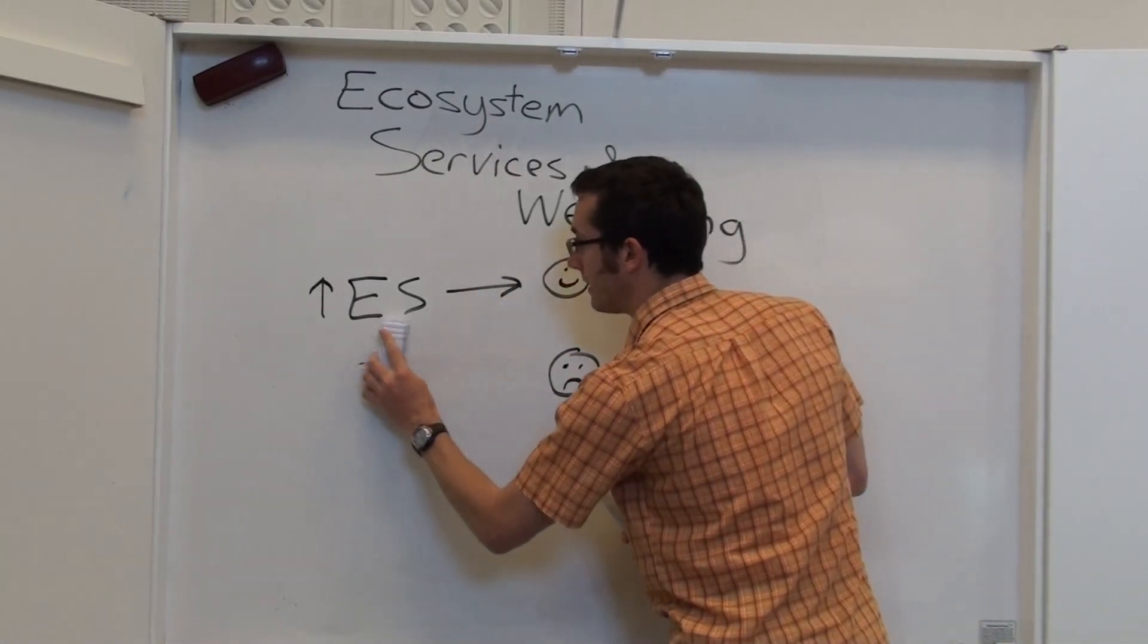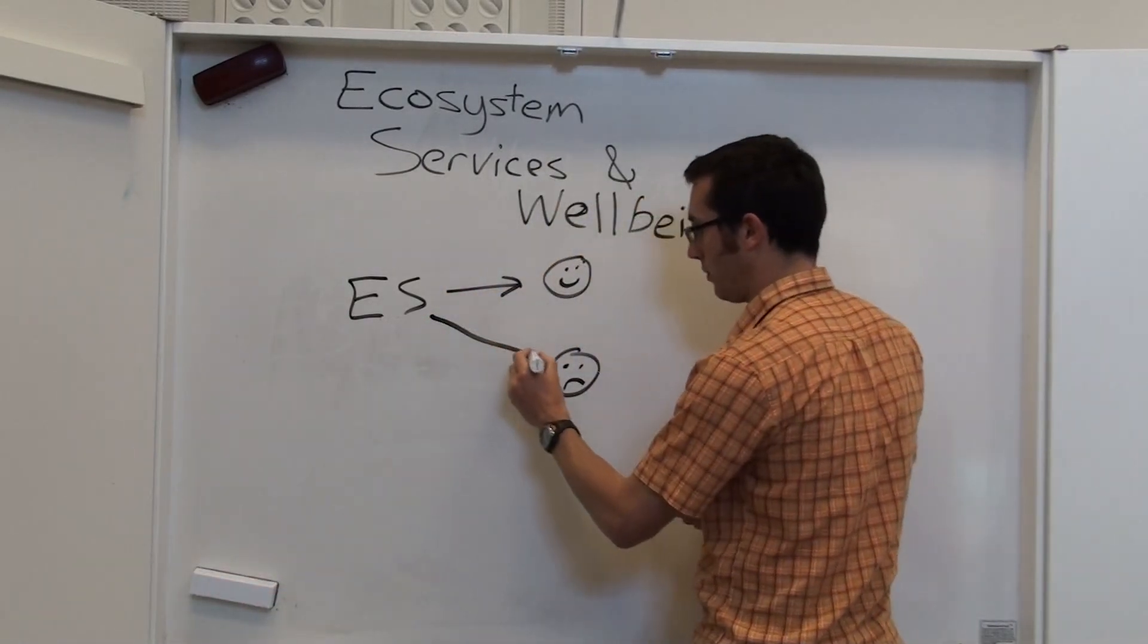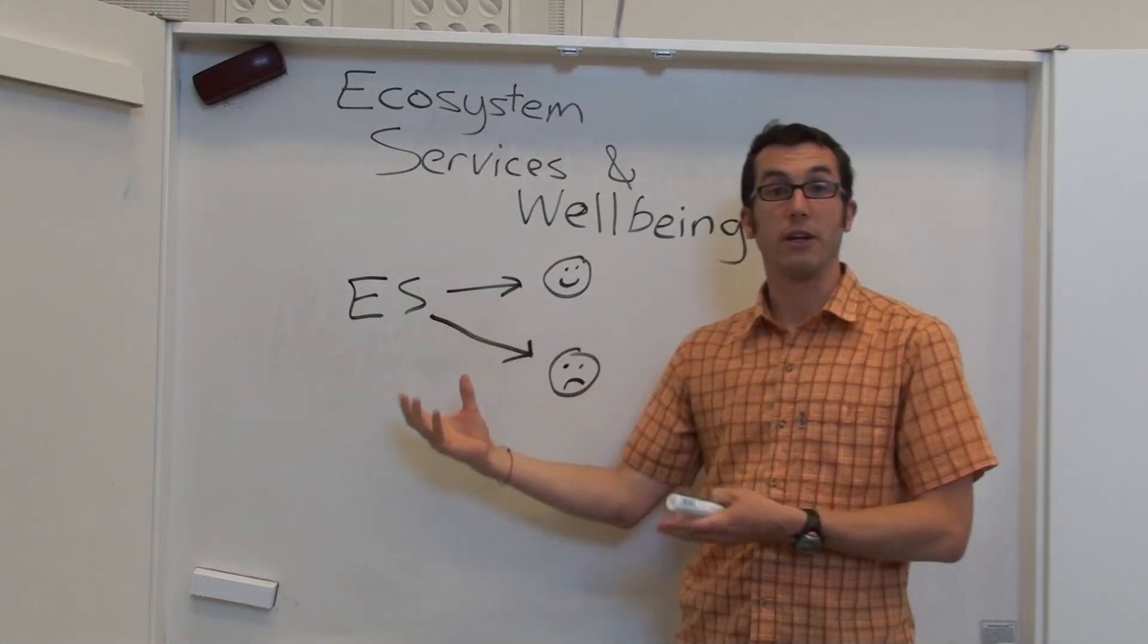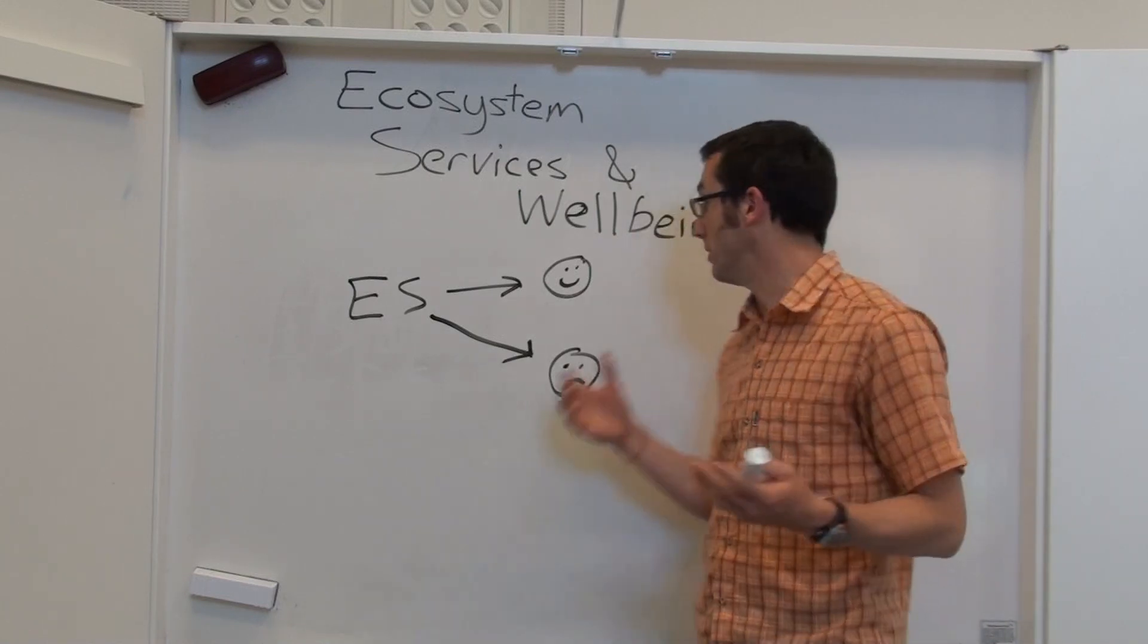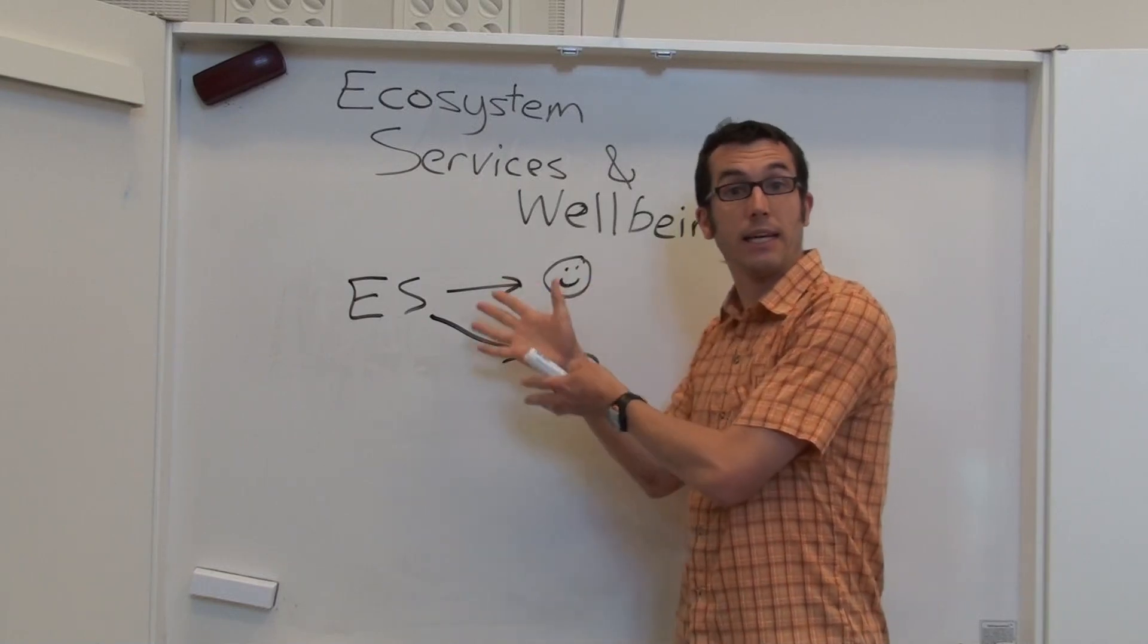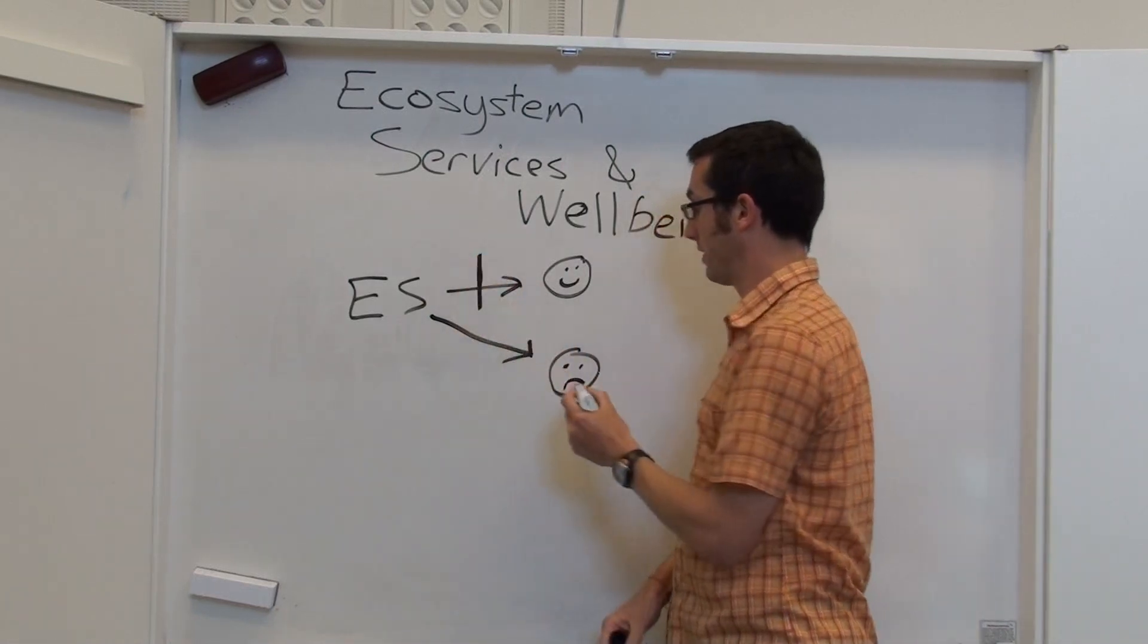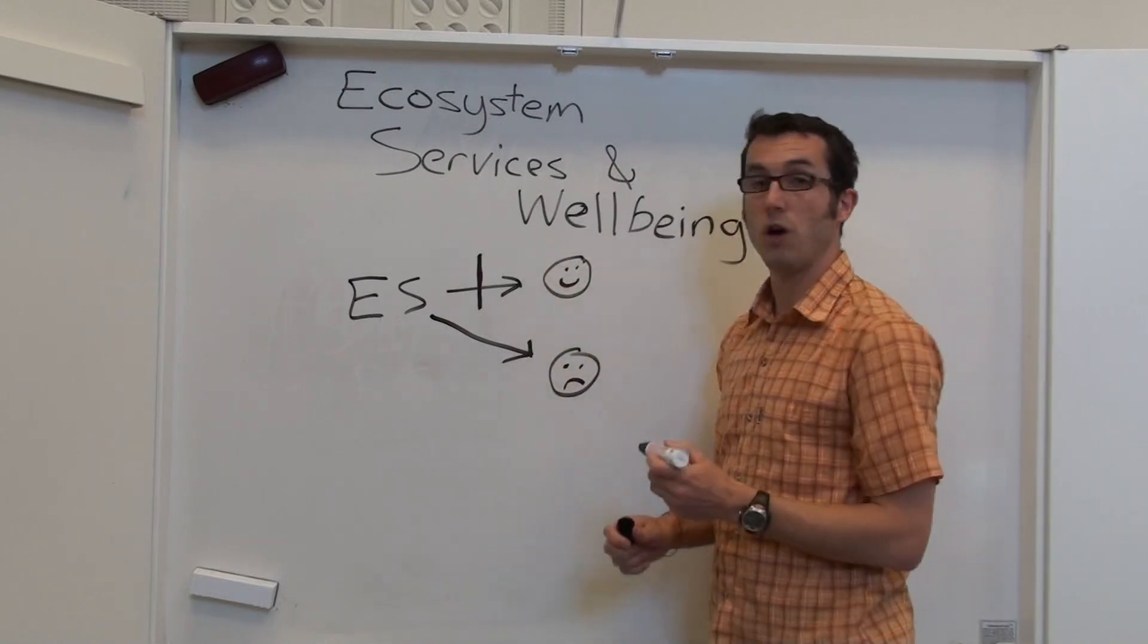So if we imagine a single ecosystem service that is utilized by two different stakeholders, we can see immediately that it's not just the total aggregate amount of an ecosystem service, say the amount of fish that's been caught in an ecosystem that is important, but it is also about how individuals are able to access and benefit from that service. So if there is some kind of access mechanism, for example this person has a fishing permit, this person does not have a fishing permit...